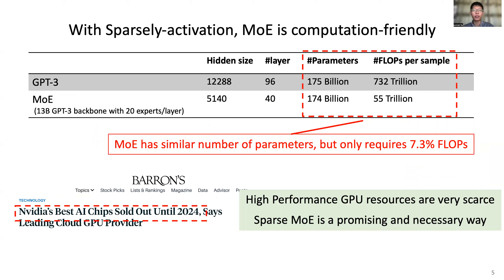With sparse activation, MoE is very computation-friendly. For example, a GPT-3 model has 175 billion parameters, and each sample will require 732 trillion FLOPs, while a MoE model can have similar parameters to this model but only requires 7.3% FLOPs. Besides, high-performance GPU resources are scarce. It's reported that NVIDIA's best AI chips are sold out until 2024. Therefore, sparse MoE is a promising and necessary way to explore.